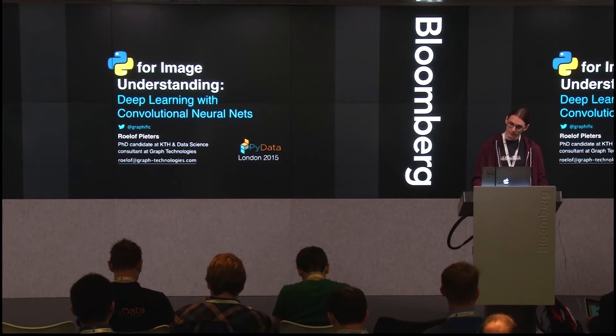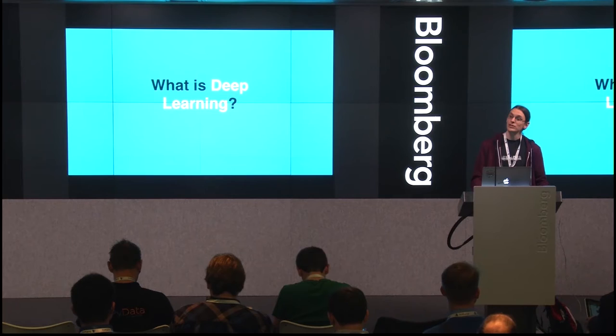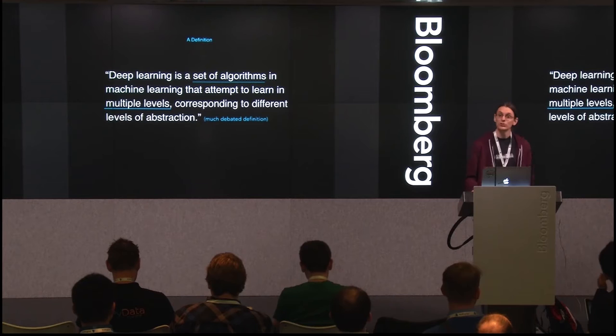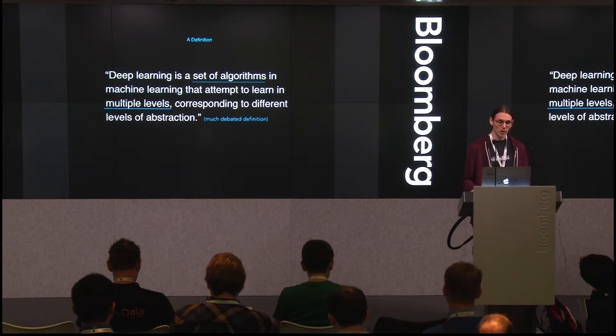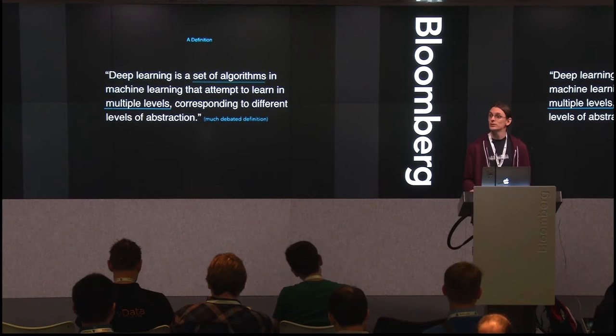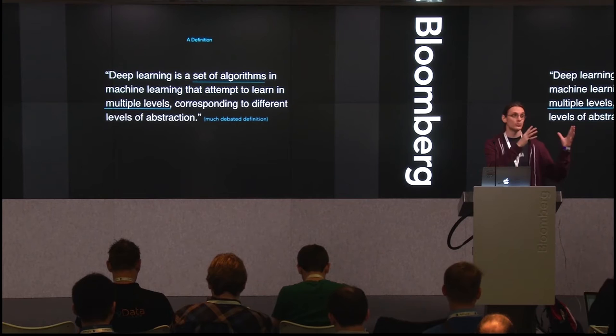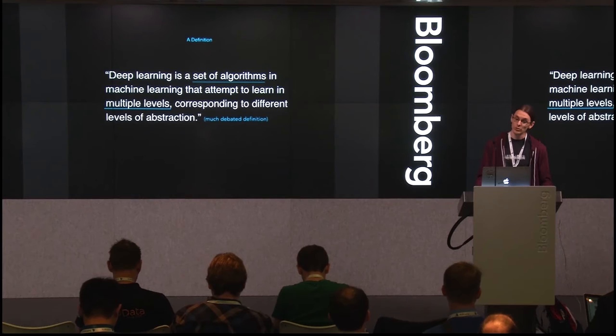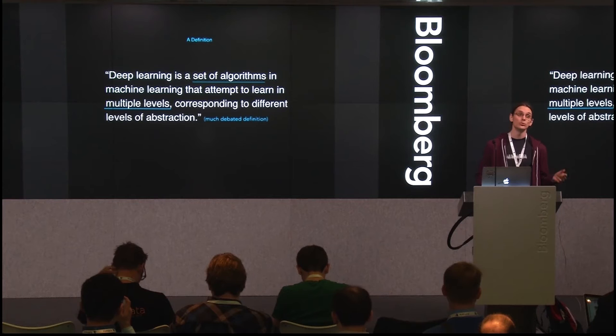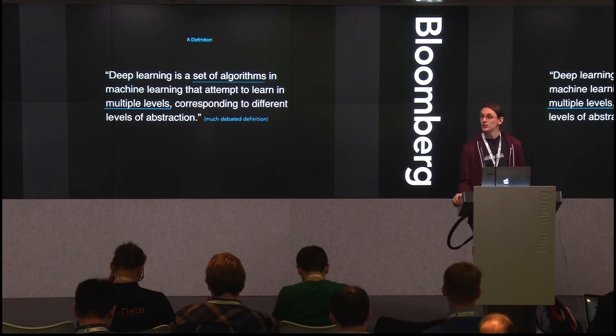So first of all, what is deep learning, which is immediately heavily debated. One of the most used definitions is that it's a set of algorithms in machine learning that attempts to learn multiple levels of features corresponding to multiple levels of abstraction. This connects to something between machine learning and deep learning called representational learning — the discipline of thinking about the best way to construct and represent knowledge in models.